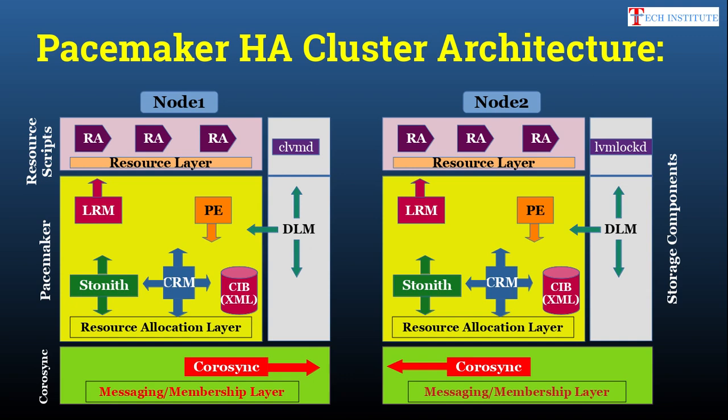So the messaging or membership layer — also called the infrastructure layer — is Corosync, the resource allocation layer is Pacemaker, and the resource layer consists of resource scripts. The components you can see — LRM, PE, STONITH, CRM — we will see in detail about them in our upcoming slides.